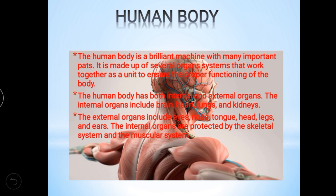The external organs include eyes, nose, tongue, head, legs, ears, lips, hands, and fingers. These are the external organs — outside the body. The internal organs are protected by the skeletal system and the muscular system.